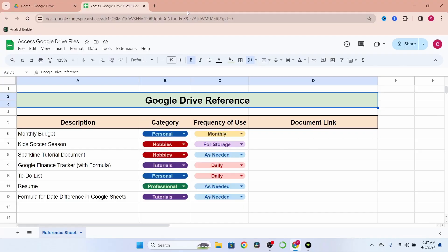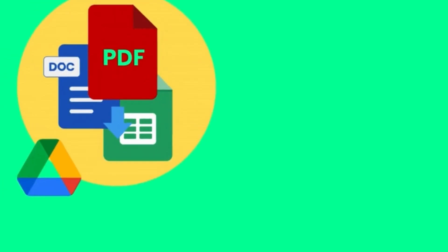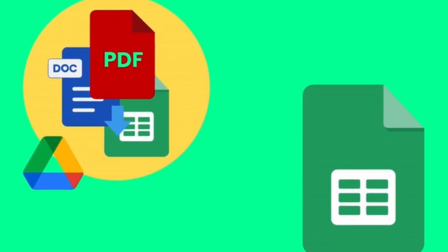Now, if you aren't familiar with chips, Google Smart Chips are dynamic information snippets that you can extract from your file saved to your drive, making it easy to quickly preview the document and open it when necessary.